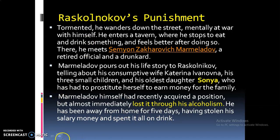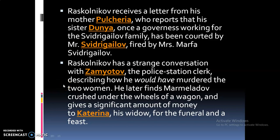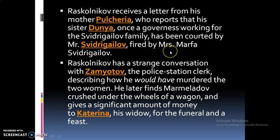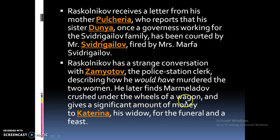Raskolnikov also receives a letter from his mother Pulcheria, who reports that his sister Dunya — who was working as a governess in the house of the Svidrigailovs — had been courted by Mr. Svidrigailov and fired by Mrs. Marfa Svidrigailova. A marriage proposal has come to Dunya, and their mother wants Dunya to marry Luzhin. Raskolnikov has a strange conversation with Zamyotov, the police station clerk, describing how he would have committed the two murders.